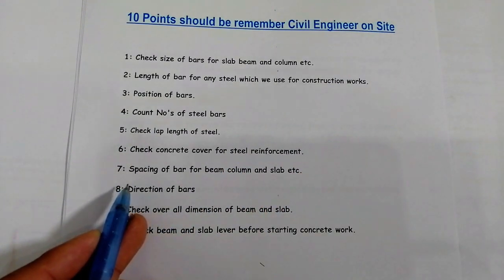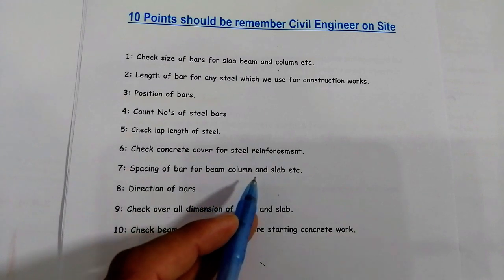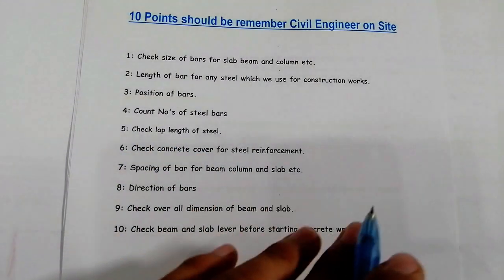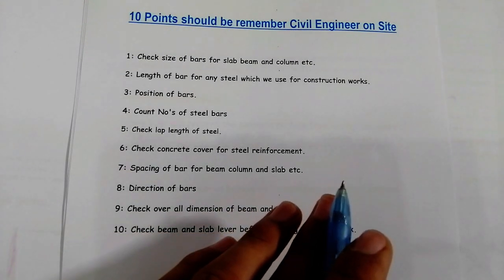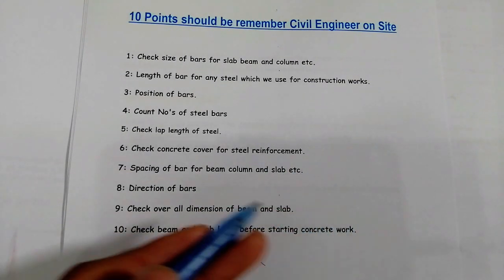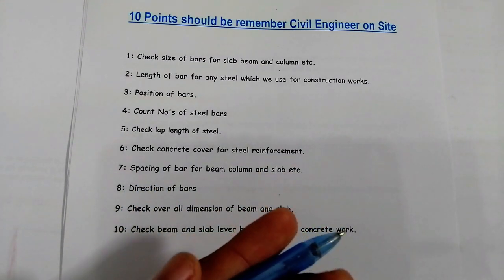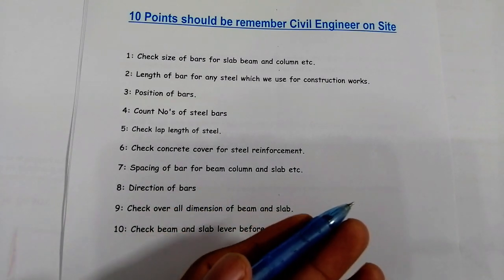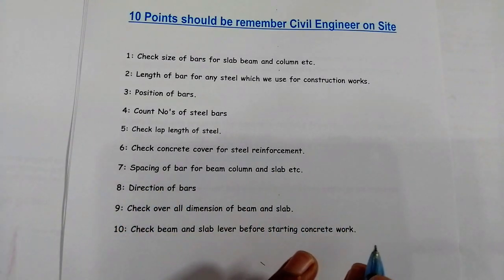The seventh point is: spacing of bars for beam, column, and slab. If you are working on a construction site with reinforcement details in an RCC slab, check the spacing for main bars and distribution bars. Also check spacing in beam and column — spacing for reinforcement is very important.